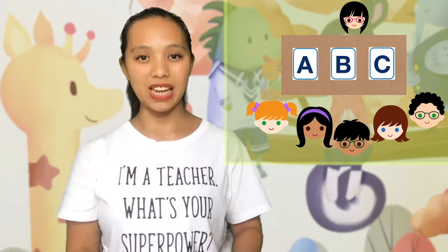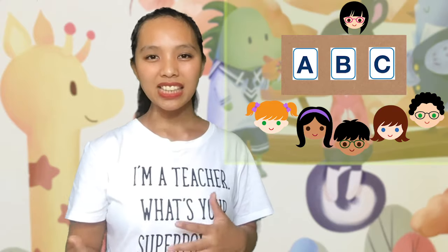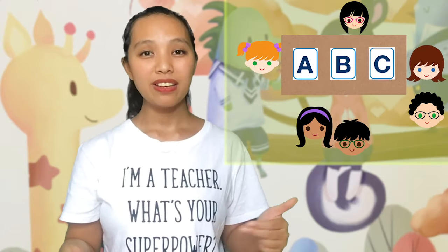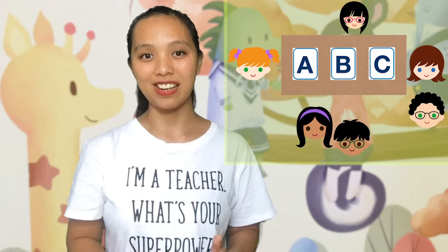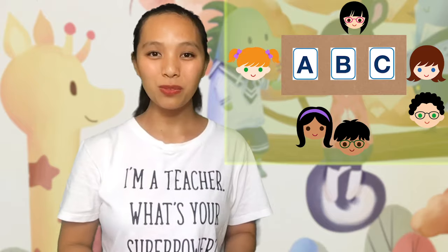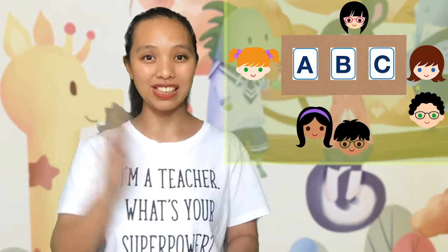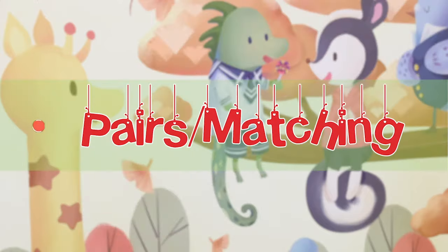Game 8 — Slap the Card: Place two or three flashcards on the table, then ask two students to stand on either side of the table facing each other. The teacher says a word and the students race to slap the correct flashcard.